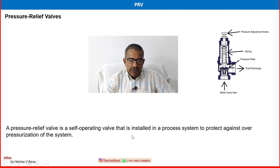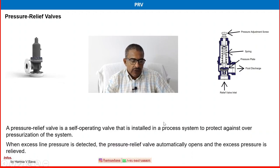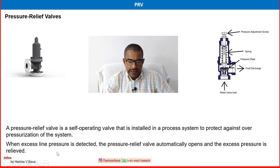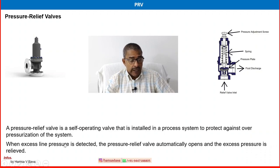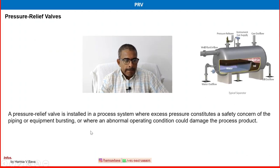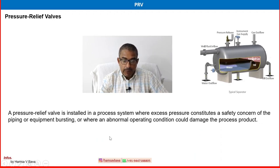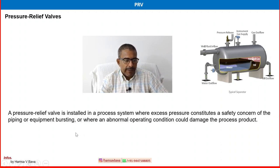This self-operating valve is installed in a process system to protect against overpressurization. When excess line pressure, separator pressure, or any other upstream pressure is detected, the pressure relief valve automatically opens and excess pressure is relieved.